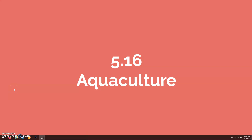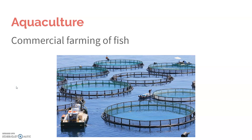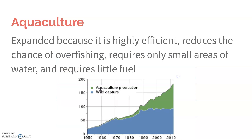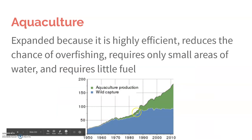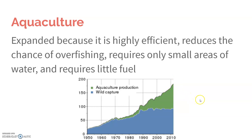5.16 is on aquaculture, the commercial fishing or farming of fish. It might be cages that are offshore or tanks that are inland, but it produces a lot of fish in a short amount of time, specifically for human consumption. There has been a drastic increase in aquaculture as wild capture has leveled off, because aquaculture is highly efficient — it reduces the chances of overfishing, requires only small areas of water, and also requires little fuel.